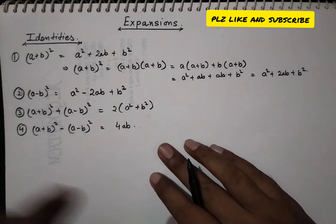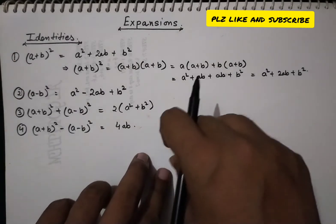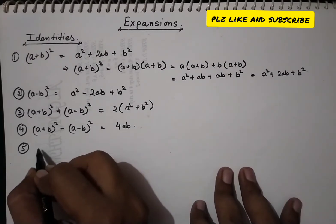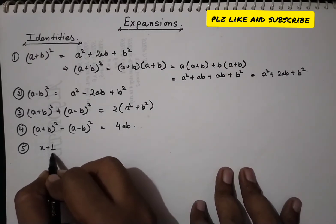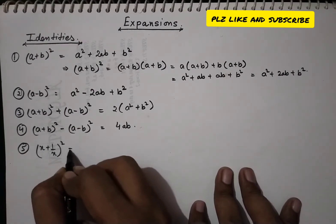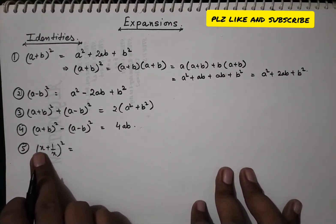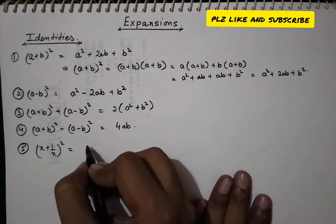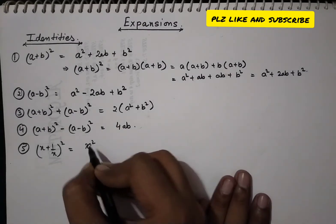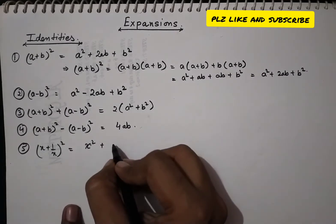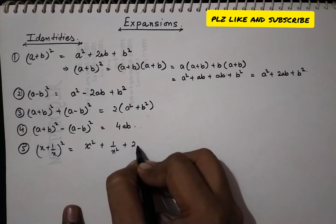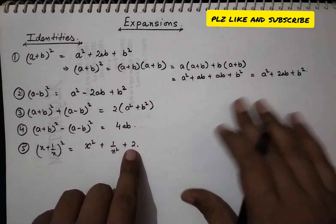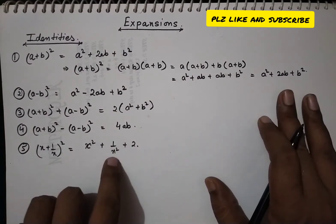Now, if in place of a we have x and in place of b we have 1/x, we get (x + 1/x)² = x² + 1/x² + 2, because 2 × x × (1/x) simplifies to 2. So (x + 1/x)² = x² + 1/x² + 2.